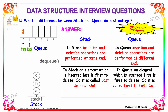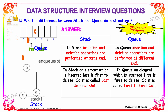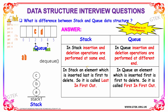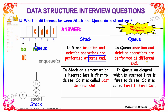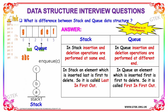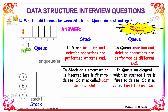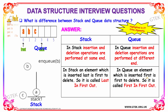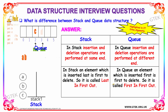Our next question is: what is the difference between stack and queue data structure? Stack performs insertion and deletion operations at the same end, whereas queue performs insertion and deletion at different ends. In a stack, the element inserted last is the first to be deleted — last in first out. Whereas in a queue, the element inserted first is the first to be deleted — first in first out.